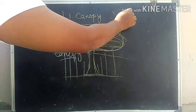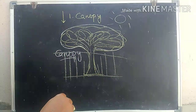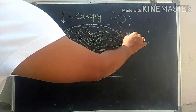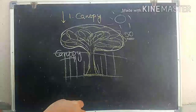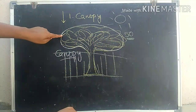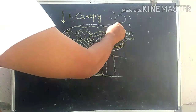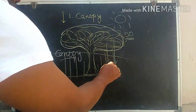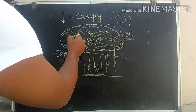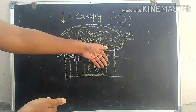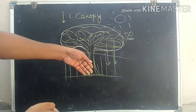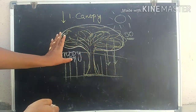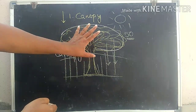For example, when sunlight falls on the forest, about 50 percent of the sunlight is trapped by the canopy. The remaining 50 percent enters through the gaps between the leaves and reaches the forest floor.